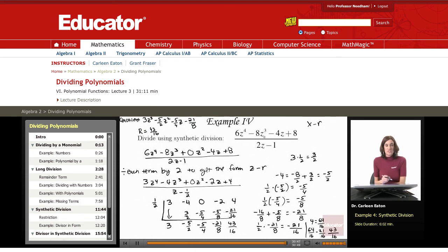So two things to notice: we had a missing term here, the z squared term was missing, so I had to use coefficient of zero. And second, this was not in the correct form, so I had to divide every term in the divisor and dividend by two. And then proceed as usual with synthetic division. That concludes this lesson on dividing polynomials.